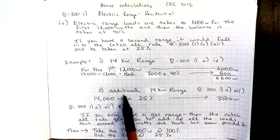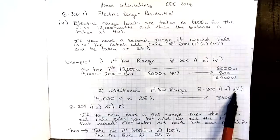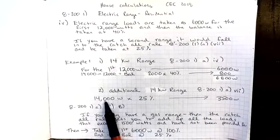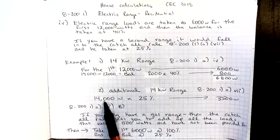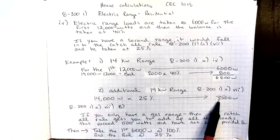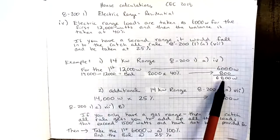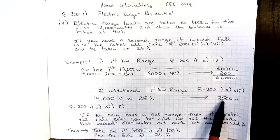Our second range fits into the catch-all rule, which is 8201A7. So for this second range, we would take the total 14,000 watts, multiply that by 25%, and take that demand factor of 3,500 towards service calculations. So both of these added up would account for the two ranges.